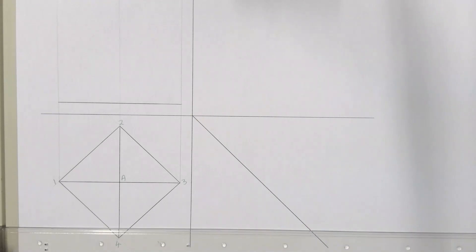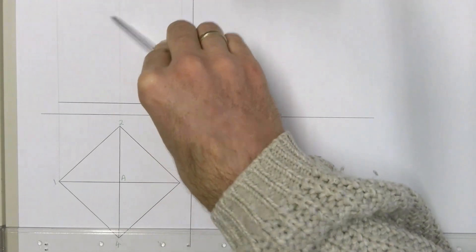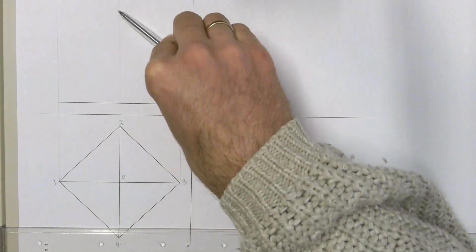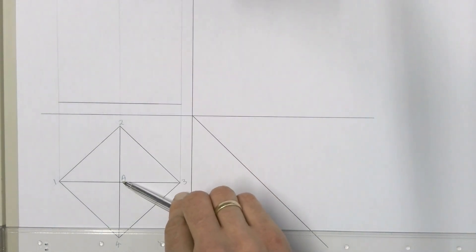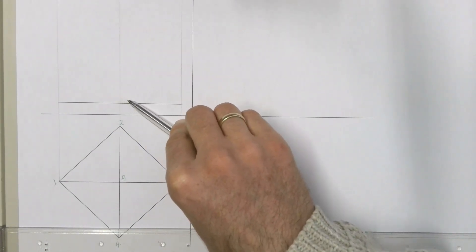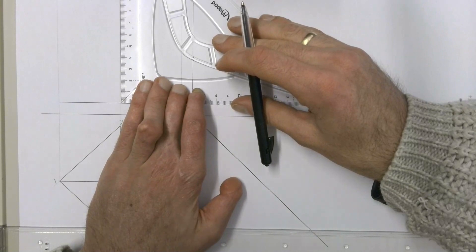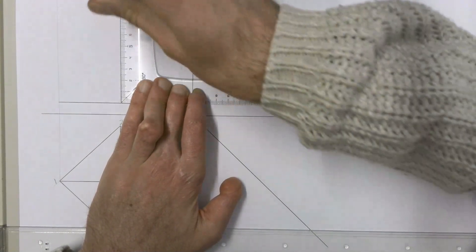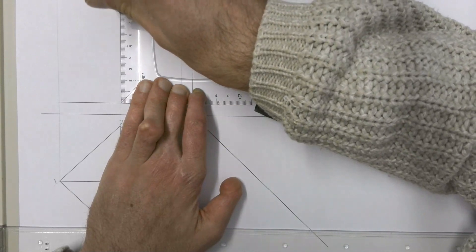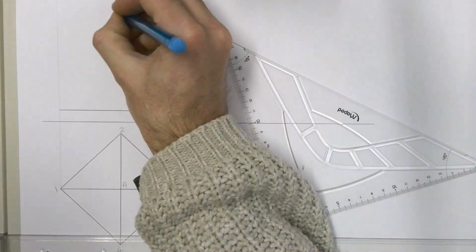The next thing we need is the height of our pyramid — specifically the perpendicular height, which is always measured from the center point of our baseline straight up to the apex. It's called perpendicular height because it forms a 90-degree angle with the base. We're going to measure straight up from our baseline on that center line — the height of this pyramid is 80mm — and mark and label that point as A.